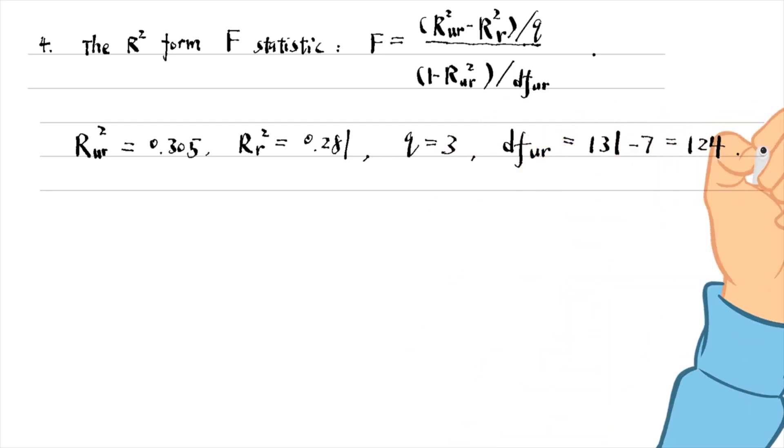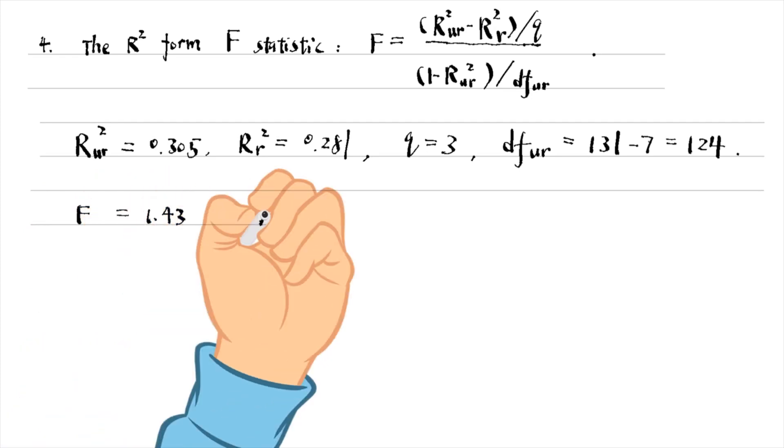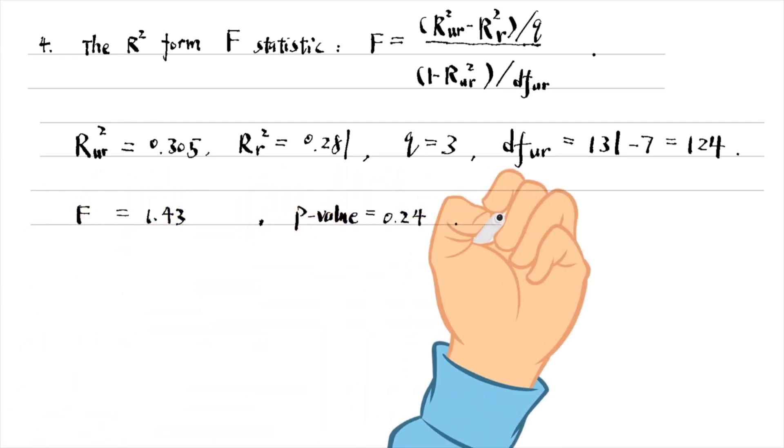The degree of freedom is 124 for the unrestricted model. We can read the R-squared for the unrestricted and the restricted models, plug in all the elements and we obtain the F-statistic of 1.43 and its p-value of 0.24.